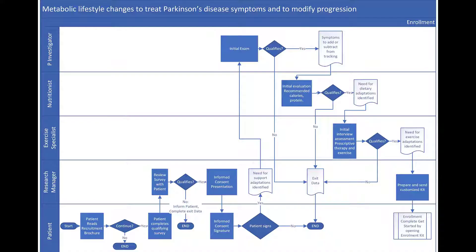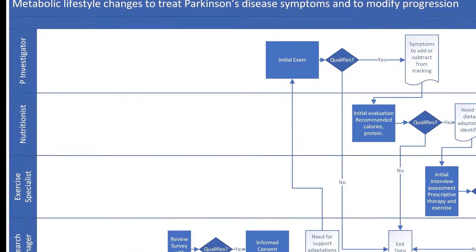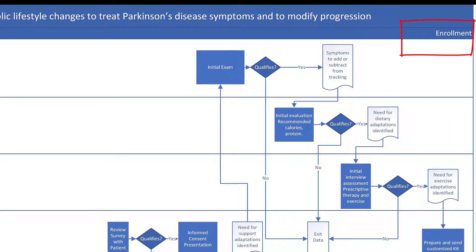Hi. In a video I posted last week, I said I plan to make instructional videos that one could use to teach persons with Parkinson's disease to follow the protocol in a clinical trial. I want to start with the swim lane diagram that shows the process of enrollment. The title is Metabolic Lifestyle Changes to Treat Parkinson's Disease Symptoms and to Modify Progression.